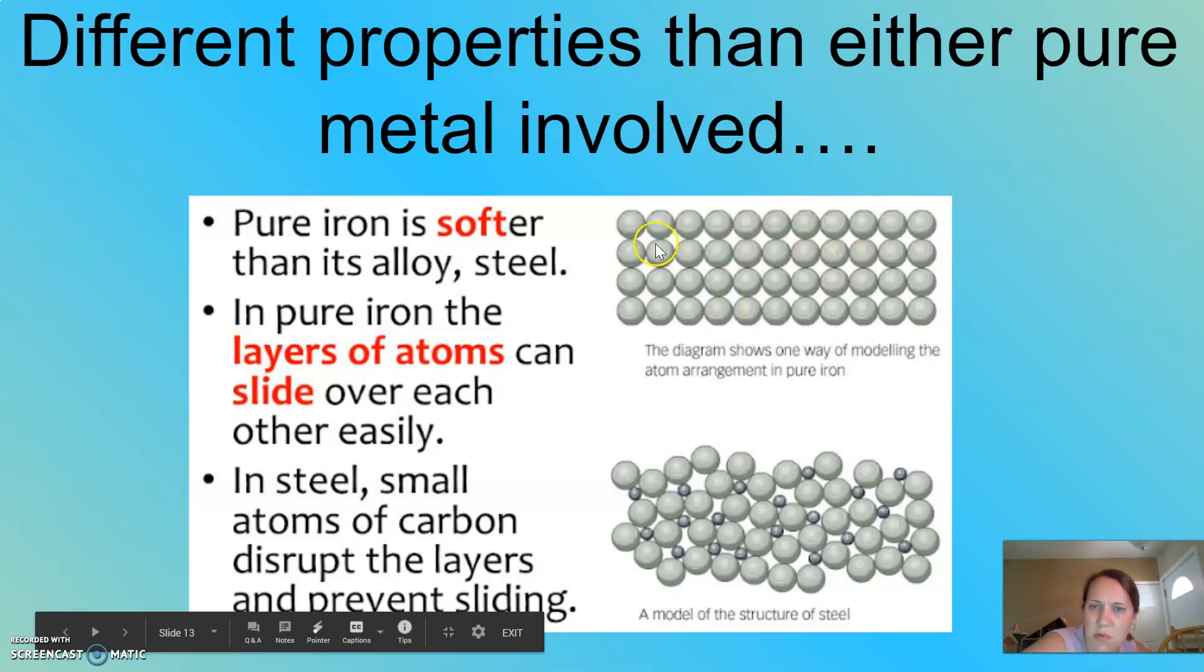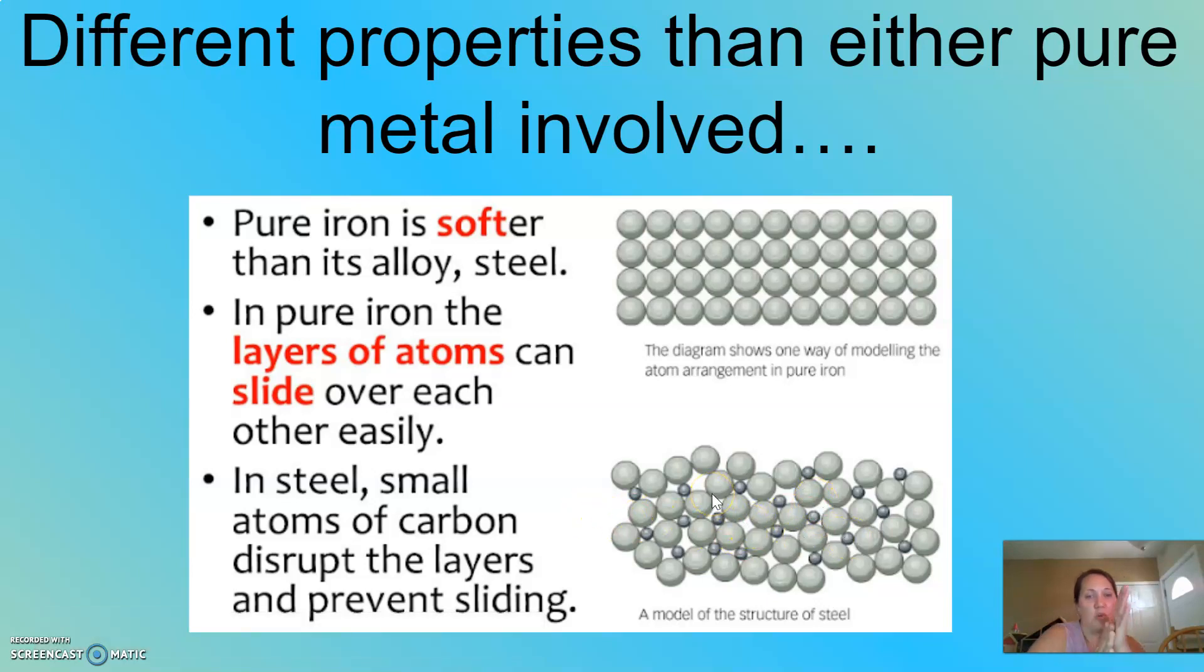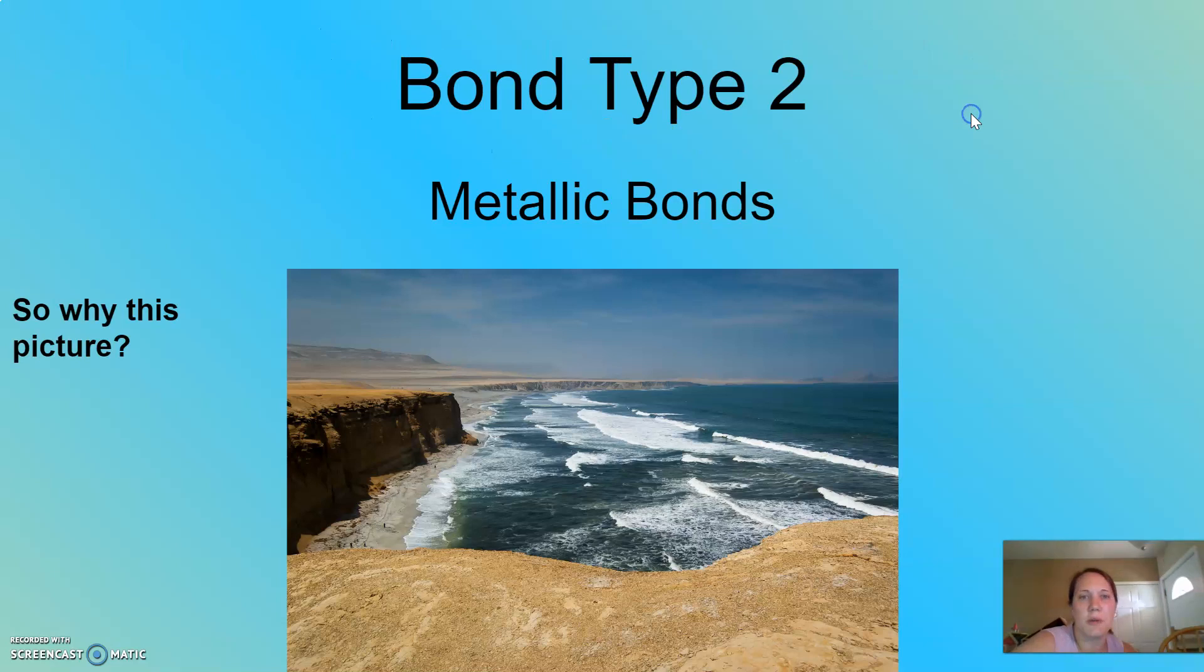So the top picture, you can see these would roll just like ball bearings right over each other. This one right here, there's not as much organization going on. So it'd be a lot harder for them to roll over each other. And as a result, steel is a lot harder than pure iron is, for example. So that's just an example of different properties that might come about when you have an alloy.